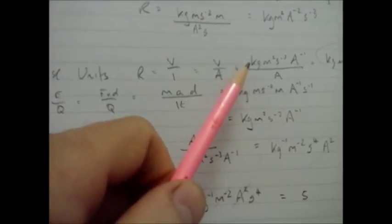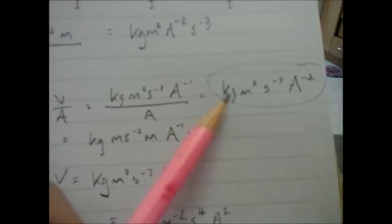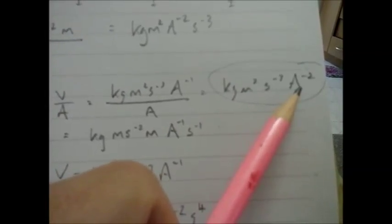And if I put that into my formula up here, all of that divided by amps gives me the units for resistance is kilograms meter squared per seconds cubed per amps squared. So that's the base units of resistance.